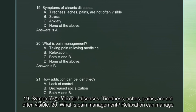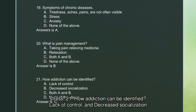Question 19: Symptoms of chronic diseases — tiredness, aches, and pains — are not often visible. Question 20: What is pain management? Relaxation can manage stress. Question 21: How can addiction be identified? Lack of control and decreased socialization.